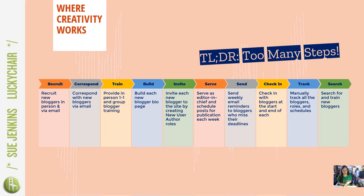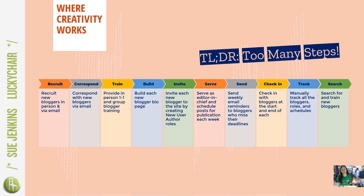Here's a visual that shows all the individual steps I was taking with every student to keep track of all the moving parts. It's a lot of work just to recruit students, gauge their interest, train them, make sure they're ready to commit, onboard them through the blog manually, do my editor-in-chief duties, send out reminders when they forget, check in at the beginning and end of each semester, track all the blogger roles, and pick up the training again. Way too many steps.